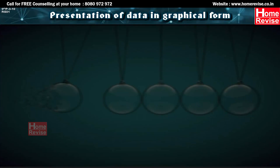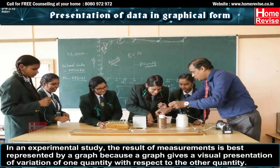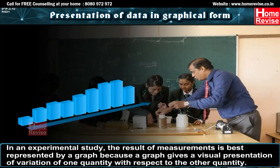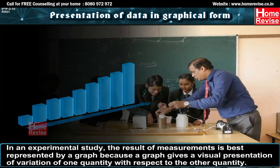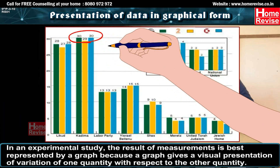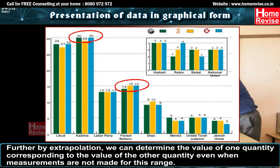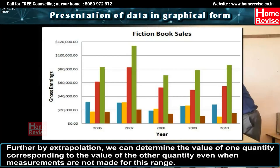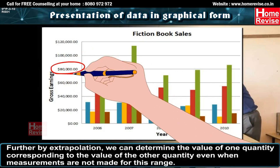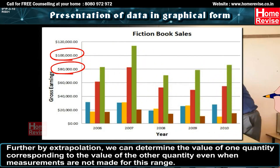Presentation of data in graphical form: In an experimental study, the result of measurements is best represented by a graph, because a graph gives a visual presentation of the variation of one quantity with respect to another. Further, by extrapolation, we can determine the value of one quantity corresponding to the value of the other quantity, even when measurements are not made for that range.